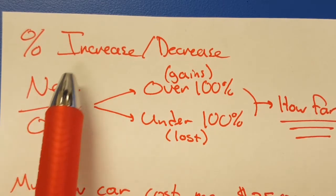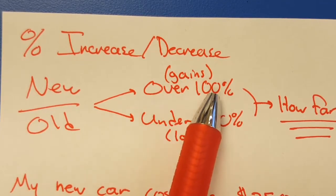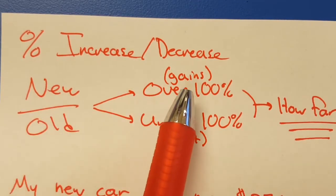When you do new divided by old, if you have a bigger new number that means you gained something and you're going to be over 100% when you do the division. By the way, when you do the division you want to think of it as a percent.